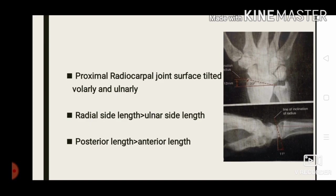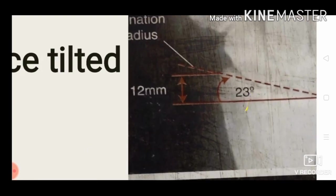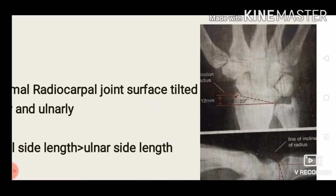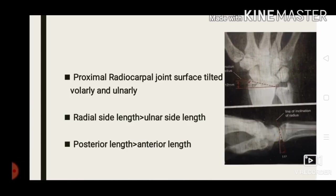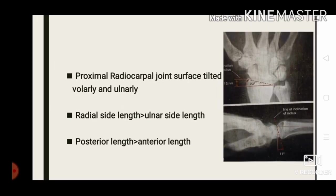This means that the lateral side length of the radius is more than the medial (ulnar) side length. You can see that on the lateral side the radius has more length compared to the medial side — that means the radius is tilted ulnarly. You can also see that the posterior length is more than the anterior length, meaning it is tilted volarly or anteriorly. Therefore, the proximal radiocarpal joint surface is tilted both volarly and ulnarly.